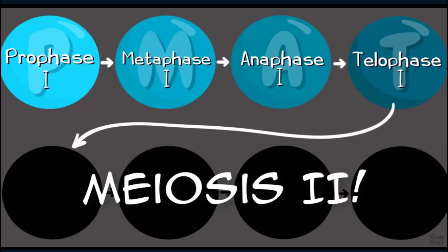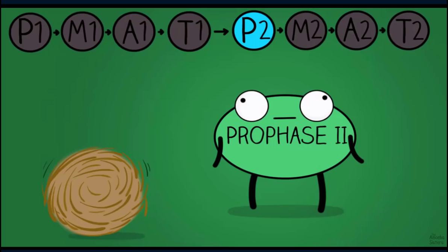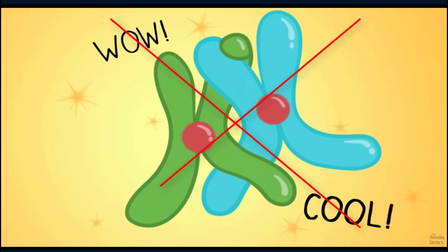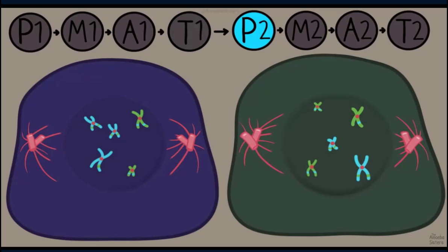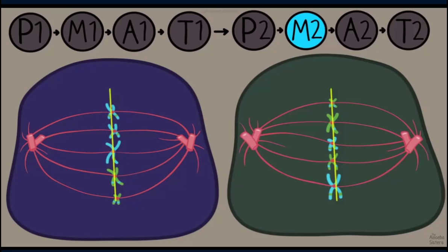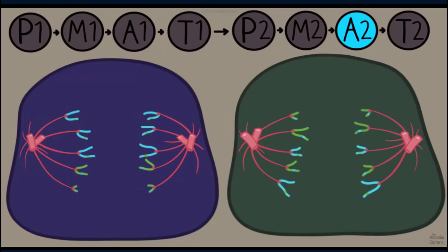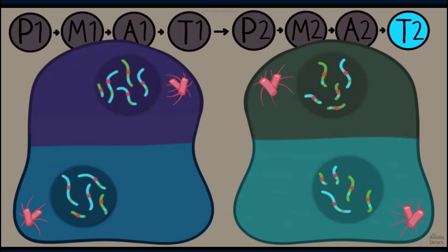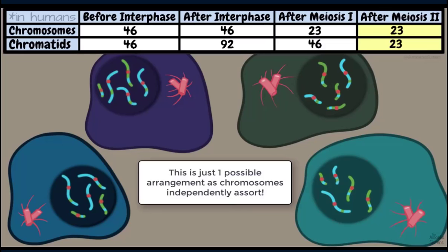Onto meiosis two. Prophase two is not as eventful as prophase one — there are no homologous pairs and crossing over does not happen again. Chromosomes condense and spindles start to form. In metaphase two, M for middle — chromosomes line up in the middle, but this time in a single file line, not in pairs. Anaphase two, A for away — this time it's the chromatids being pulled away by spindle fibers. In telophase two, nuclei reform and the two cells divide, forming four cells. Cytokinesis follows.